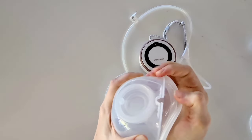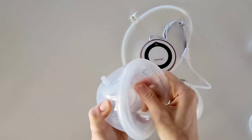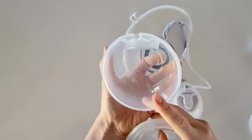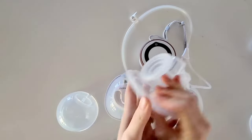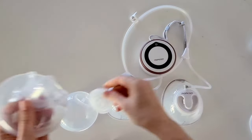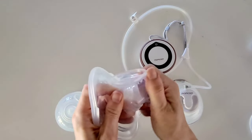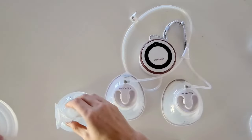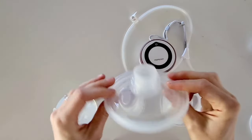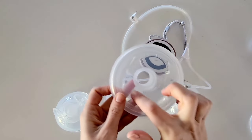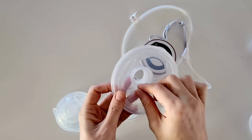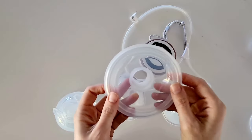Now we are going to want to pull apart any of these parts that have come into contact with the breast milk. You have your collection cup, your diaphragm, your duckbill valve, a linker as well as your flange. I should also point out if you have any flange inserts you will want to remove these as well and separate them.